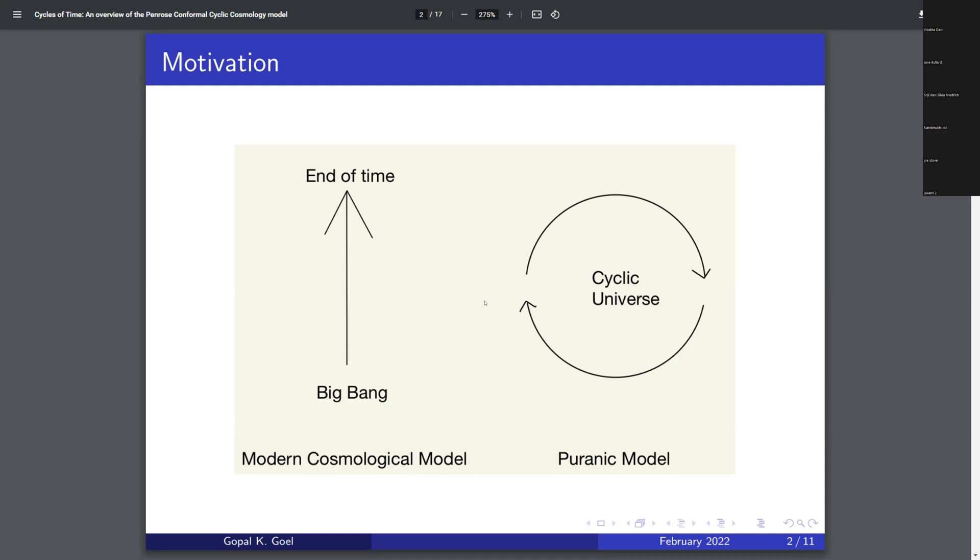In the Puranic model, we know that we have a cyclic universe. So there seems to be a conflict here where most modern cosmological models are not cyclic. However,